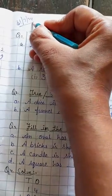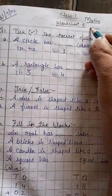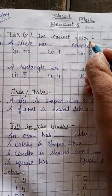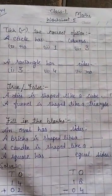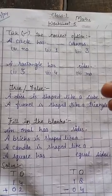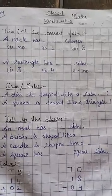Firstly, mention today's date, make margin line, worksheet fifth. Question number one, tick the correct option. Today's worksheet has taken the shapes chapter, plane shapes and solid shapes both.